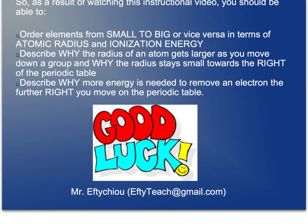As a result of watching this, you should be able to order elements from small to big or vice versa in terms of atomic radius and ionization energy. You should be able to describe why the radius of an atom gets larger as you move down a group and why the radius stays small towards the right of the periodic table. Also, you should be able to describe why more energy is needed to remove an electron the further right you move on the periodic table. I hope this was helpful and good luck.